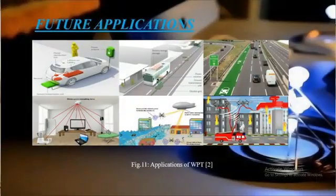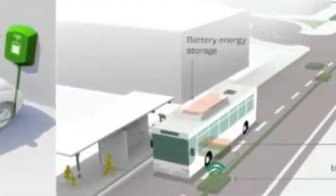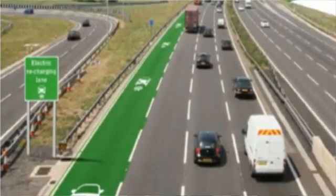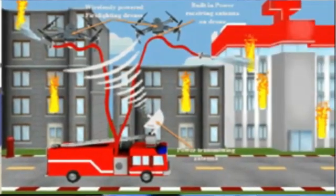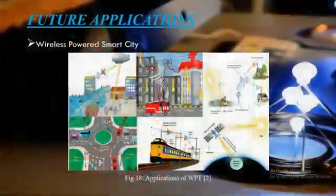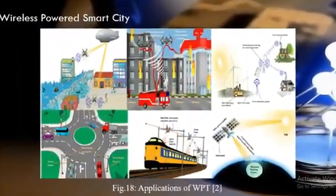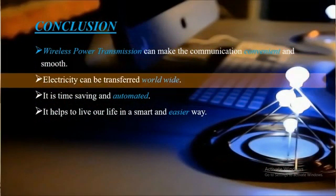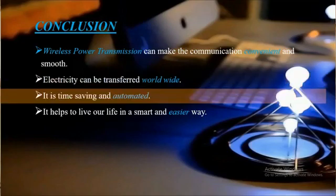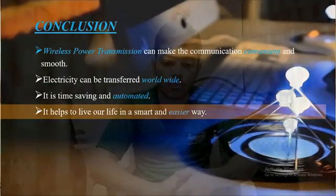We have now discussed the three phases, so let's conclude our presentation along with some future applications of WPT. If implemented, WPT can lead us to smart cities, electrical vehicles, automated bus routes, vehicle charging roads, and in critical situations like floods, WPT can help build connections to remote areas and support electronic drones, thus reducing fuel expenses and saving natural resources. WPT makes communication convenient, electricity can be transferred worldwide, it is time-saving and automated, and it helps us live in a smarter, easier way.